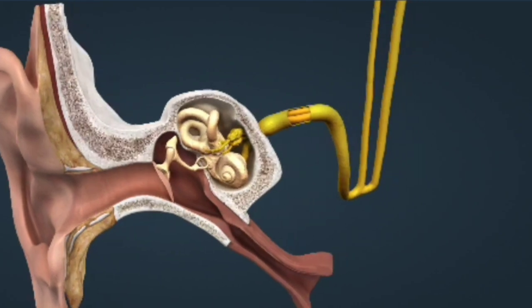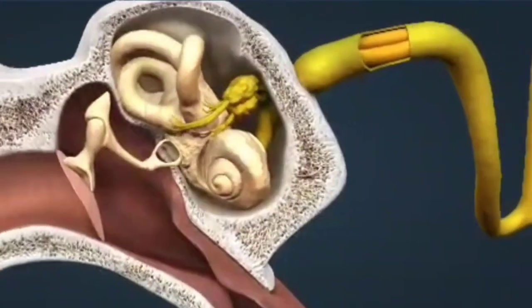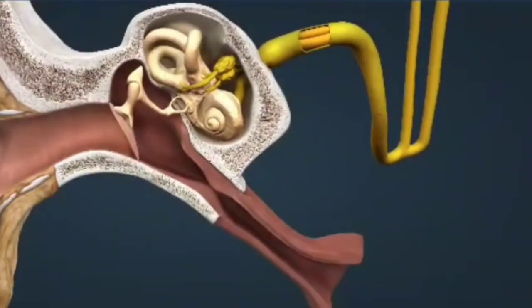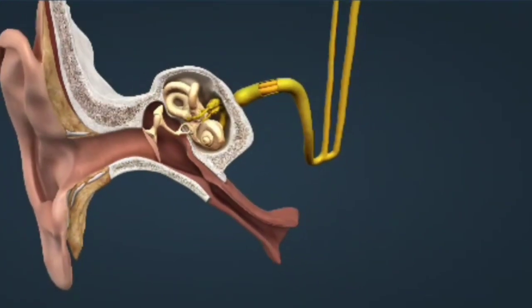The cochlear nerve is responsible for connecting the ear to the brain. It picks up sound vibrations from the inner ear and transmits electrical signals to the brain that are interpreted as sound.